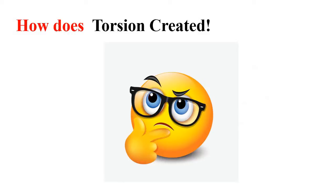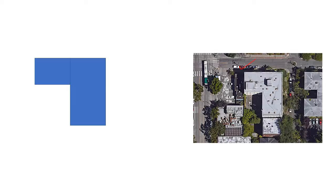Let's start with how torsion is actually created in any structure. We will consider a building whose plan shape is like an L. The center of gravity (CG) of this L-shaped plan is located here — at this offset position within the plan.